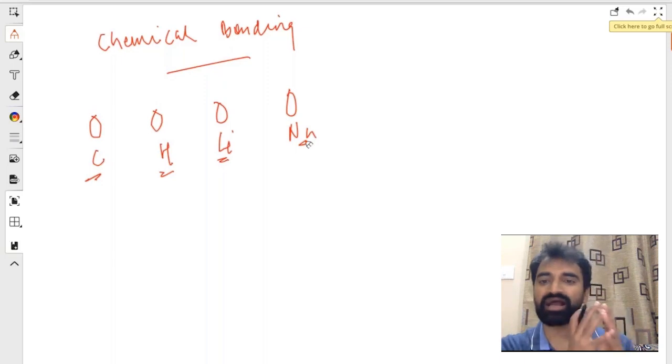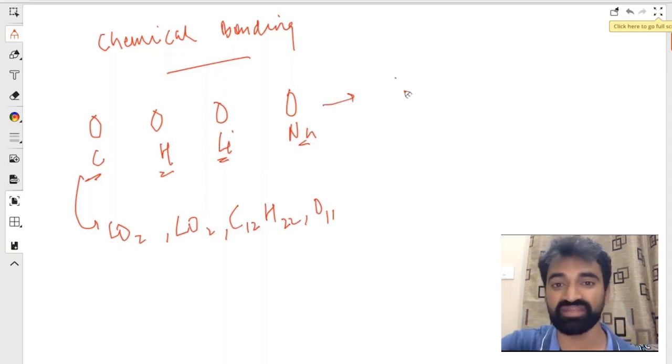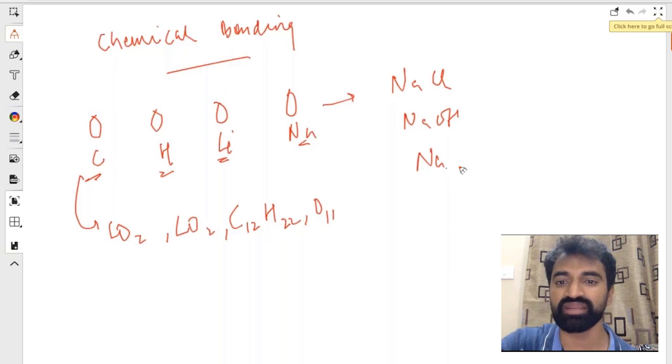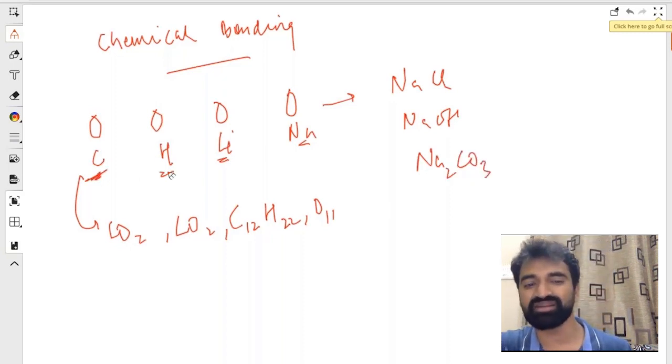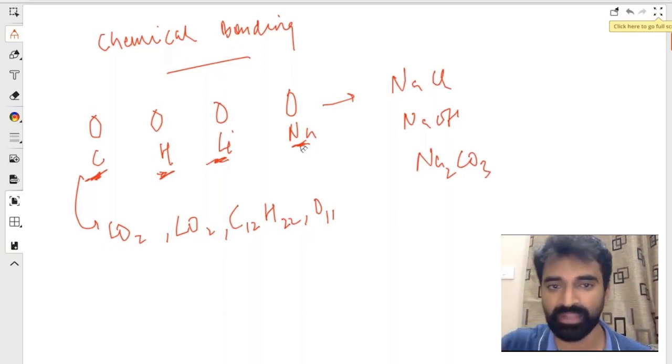I will never have pure carbon in nature, never have pure lithium in nature. They will always exist with something else. Carbon can exist as CO2, CO, or sugar. Sodium exists as NaCl, NaOH, or Na2CO3. Basically, all of these elements do not exist as elements; they exist along with other elements. This is the root cause of our problems.